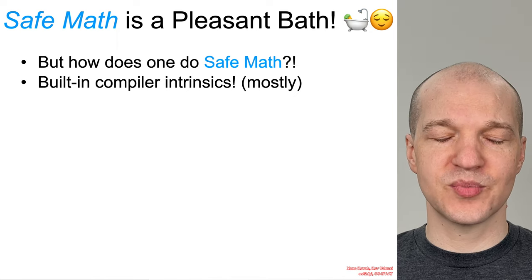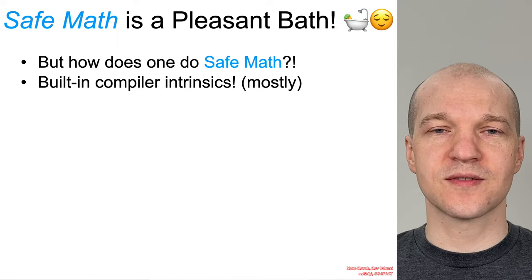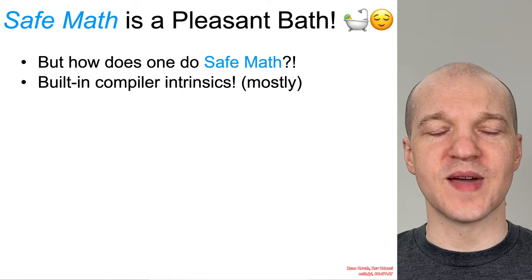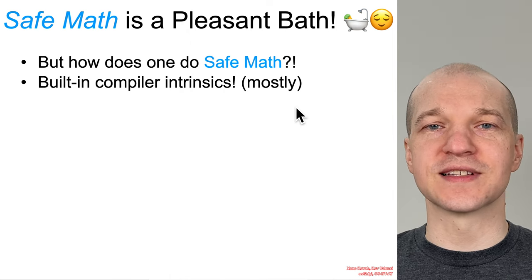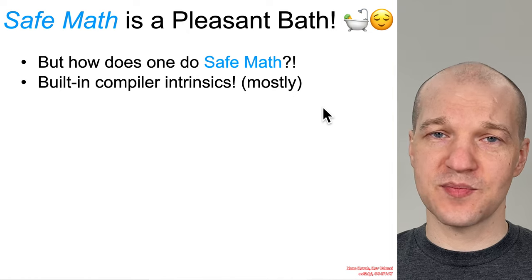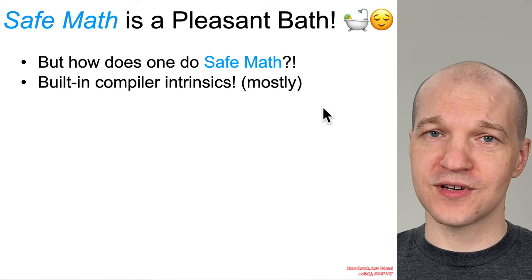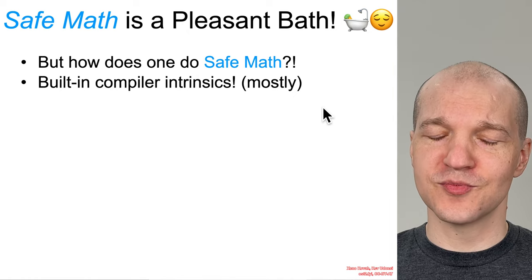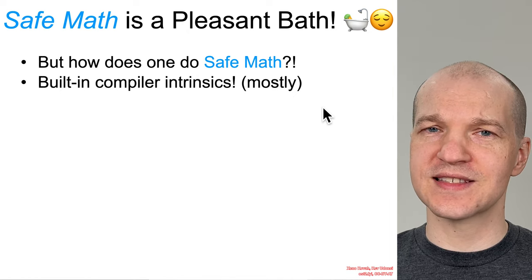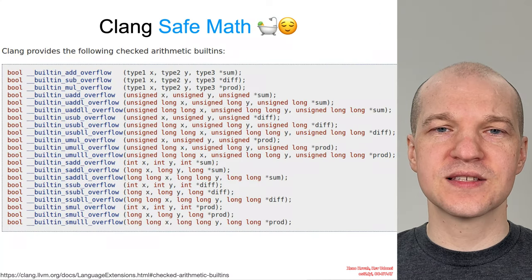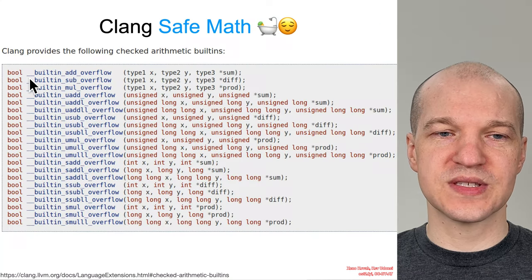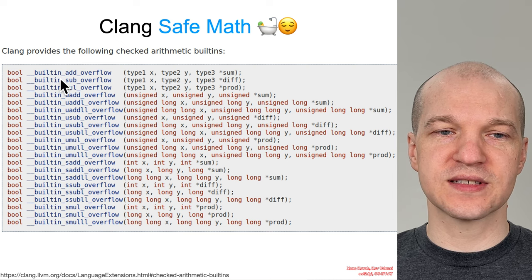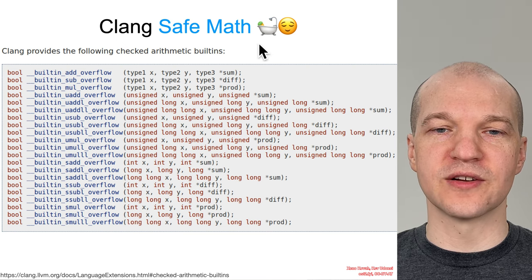Safe math is a pleasant bath. How does one do safe math? Well, the answer is built-in compiler intrinsics, mostly. This might be the coolest thing you've never heard of, and I assume you've never heard of it because I see it so infrequently. Clang has these built-in compiler intrinsics called built-in add overflow, sub overflow, and multiply overflow.